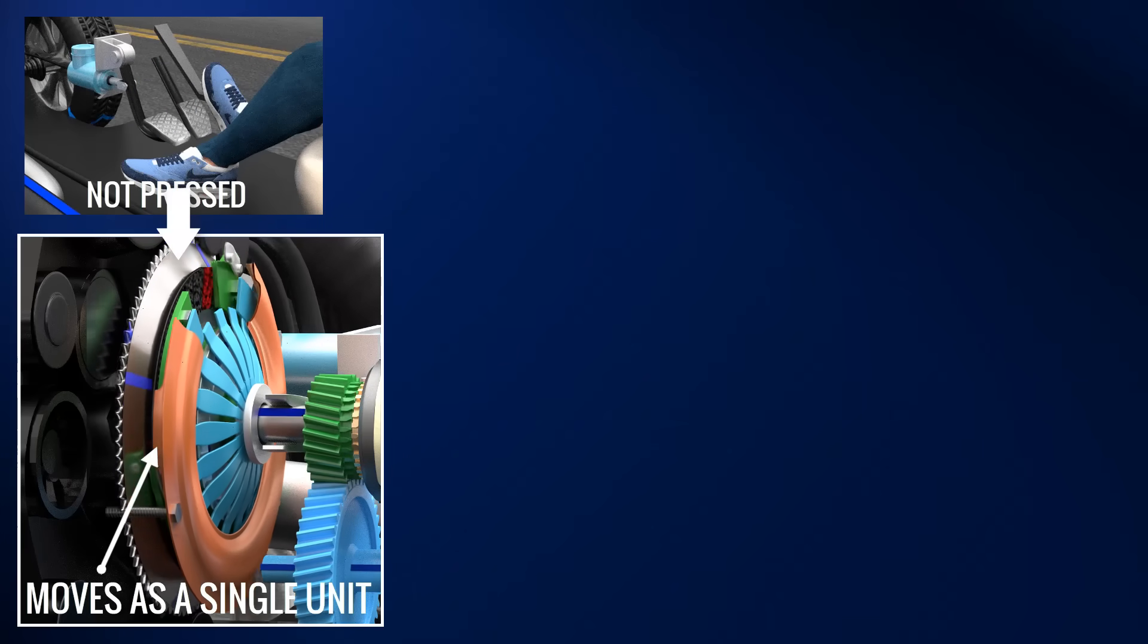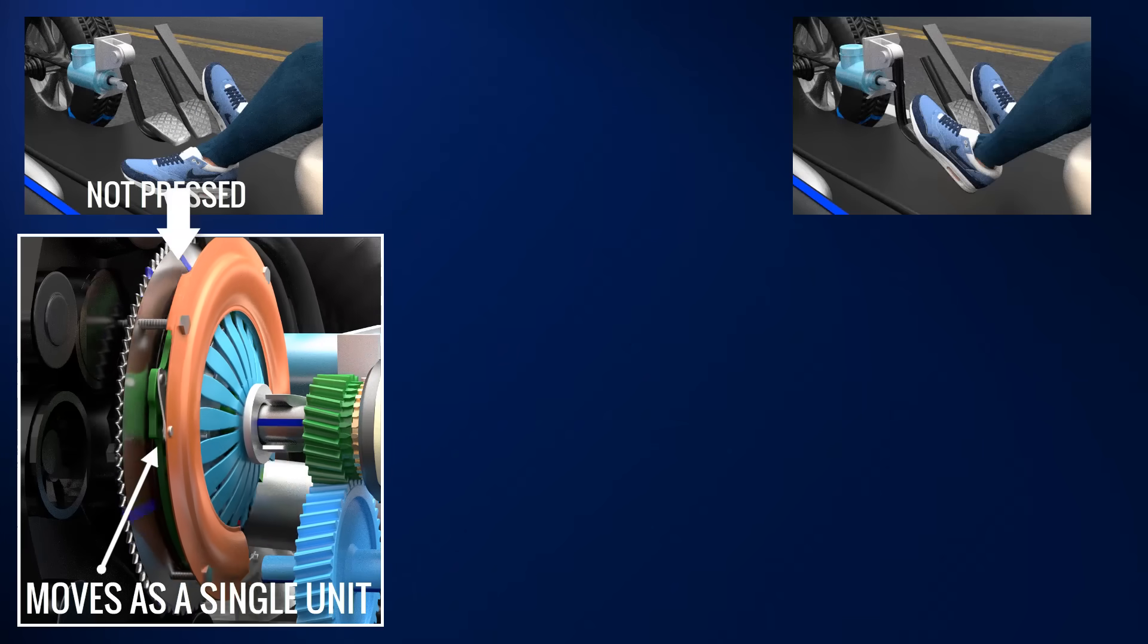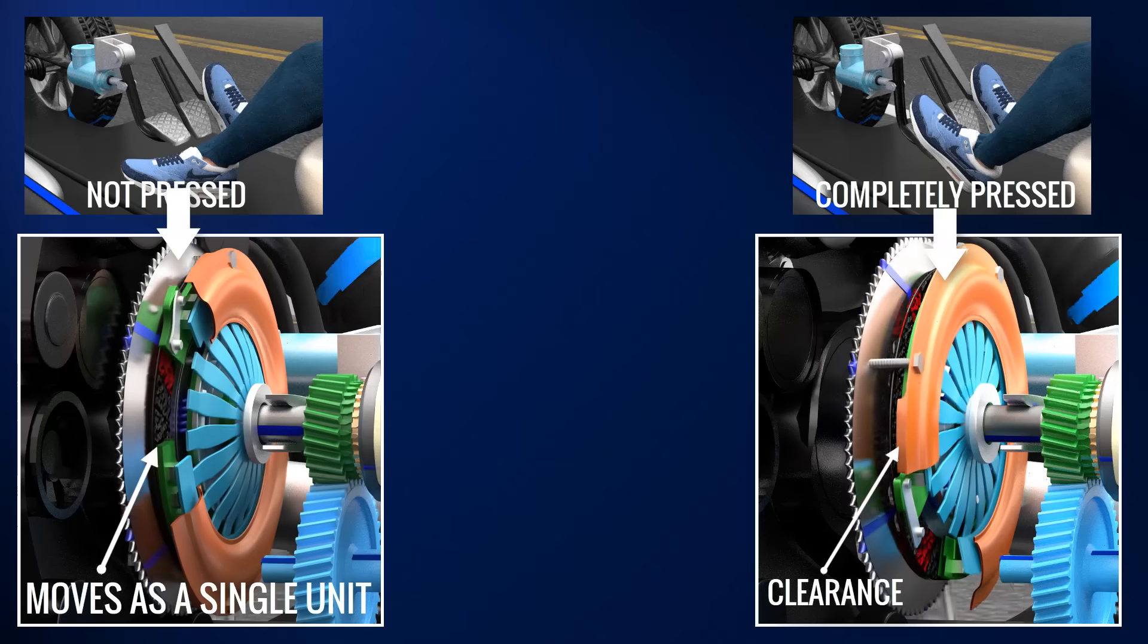In short, when you don't press the clutch pedal, the friction disc and flywheel will move together. And when you press it completely, the friction disc and flywheel will be separated.